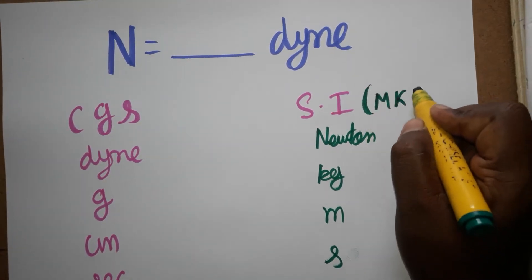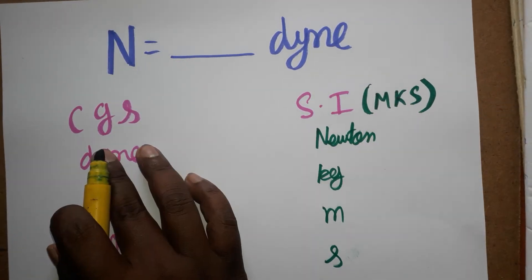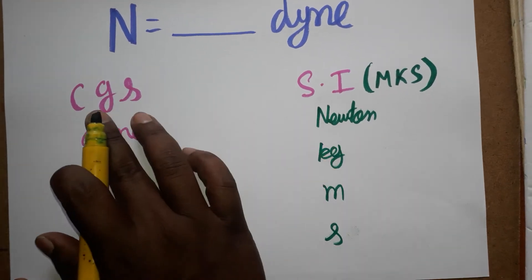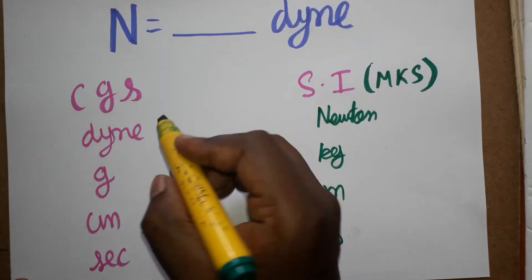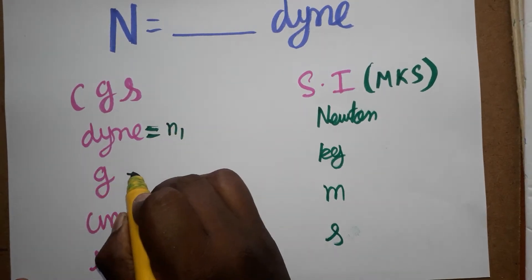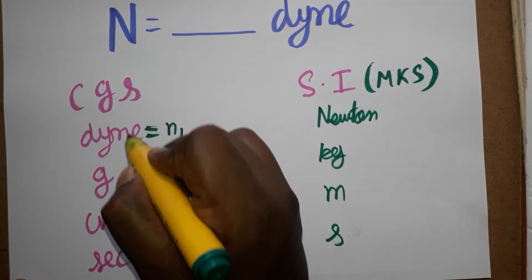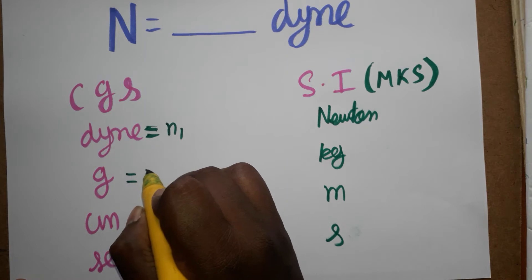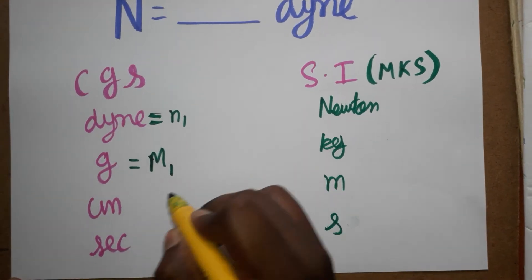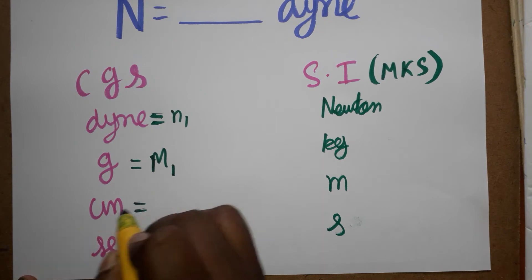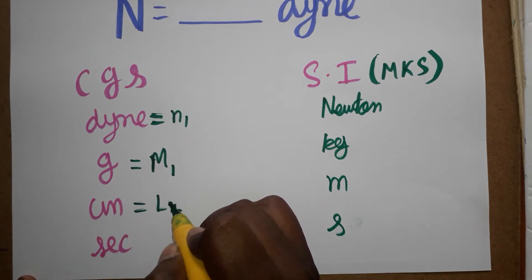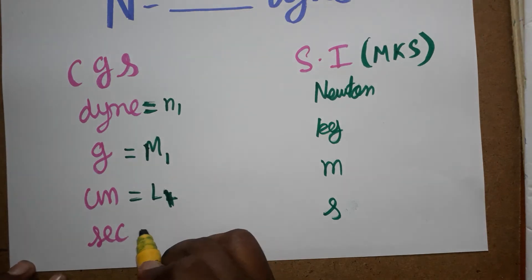The SI system follows MKS, and the CGS system follows centimeter, gram, second. The force unit in CGS is the Dyne. The mass unit in CGS is gram, which I am taking as M1. The length is centimeter, taken as L1, and time as T1.